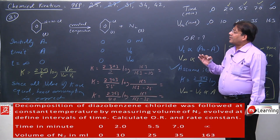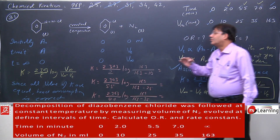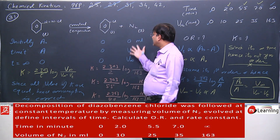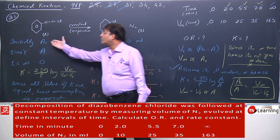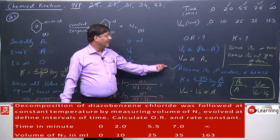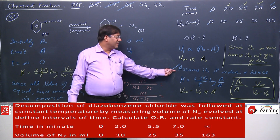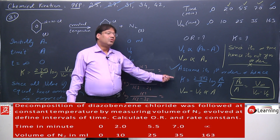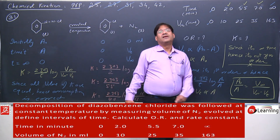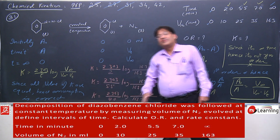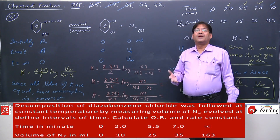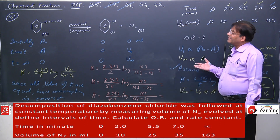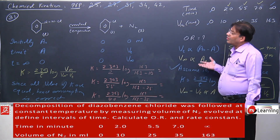So to summarize these types of problems: we need to identify the reaction and how the given data is related to a₀ and a. In such situations we assume first order, write the rate law constant, modify it in terms of the given data, and prove that the rate constant is equal across time intervals. This confirms the assumption, and the rate law constant is also determined. Let's move on to the 34th problem.